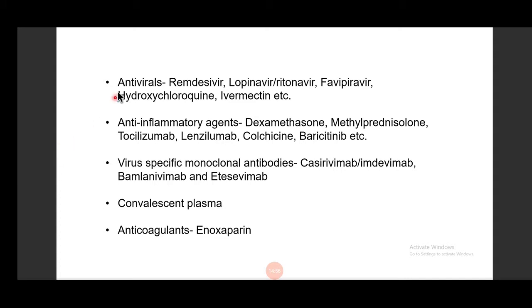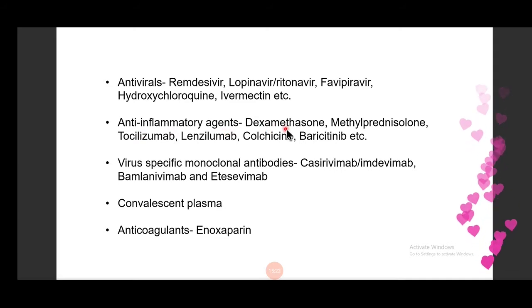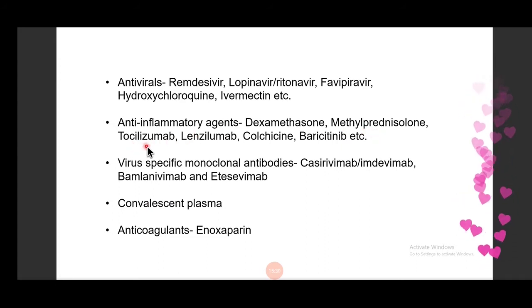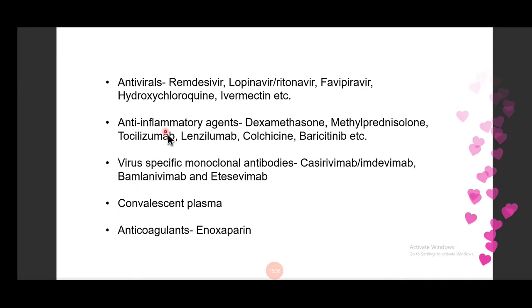Because this is a pandemic, a lot of drug repurposing was done and many agents were trialed. We tried antivirals: remdesivir, lopinavir-ritonavir (a protease inhibitor used for HIV), favipiravir, hydroxychloroquine, ivermectin, etc. Once we realized there is a hyperinflammatory situation, we started investigating anti-inflammatory agents — like steroids such as dexamethasone and methylprednisolone — and monoclonal antibodies against interleukins. Some trials are ongoing, some were discontinued, some showed promising results, and most showed no effect.